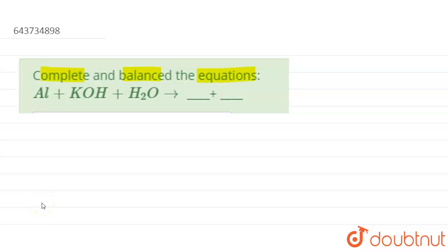The equation shows aluminum treated with potassium hydroxide and water. Aluminum is an amphoteric metal - it reacts with both alkali and acids to liberate hydrogen gas. The products formed will be potassium aluminate (KAlO2) and hydrogen gas.